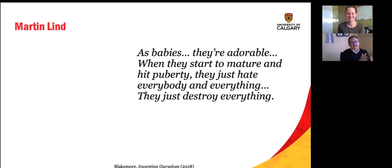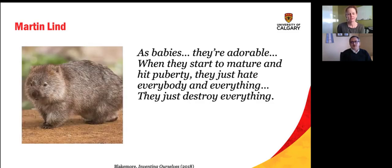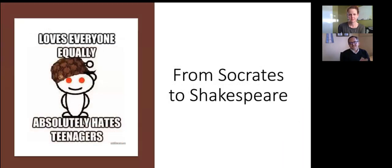I always like this take from a scientist named Martin Lind. As babies, they're adorable. When they start to mature and hit puberty, they just hate everybody and everything. They just destroy everything. Well, what they were actually talking about were adolescent wombats. So this is something that kind of goes across species, where people have expressed a lot of frustration about kind of the growing pains that go through those teenage years. So basically, from Socrates to Shakespeare, everybody loves to hate teenagers. And we're going to talk a little bit today about why we really shouldn't hate them and why the things that they do while they don't make sense to adults really are adaptive and make sense when we understand their brain development.